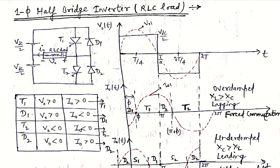In the output current waveform, we draw it as a sinusoidal waveform. There are two case studies: the first is where XL is greater than Xc, and the second is where Xc is greater than XL. In the first case, if the load has XL greater than Xc, it is a lagging case because L dominates over C, so it is a lagging load case. The current will lag the voltage waveform by an angle called phi.